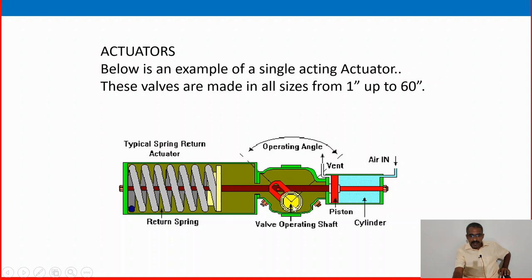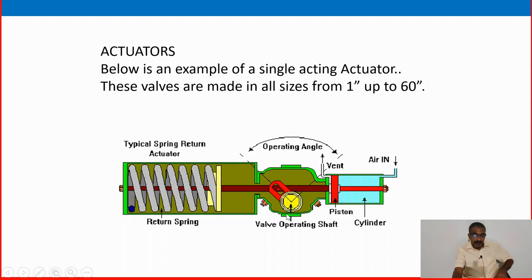You can see the return spring, open position and closed position, air in and vent, and piston and cylinder. When air is in — air to close valve — air in means the valve will be in open position. When the air is released or air fails, the valve will be in closed position. At the top there is an indication showing whether the valve is in closed or open position.